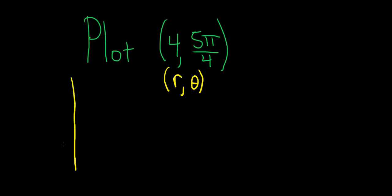So to plot the polar coordinate, we'll first travel a distance of theta. So theta is 5π over 4. So here's π. And if you think of π as 4π over 4, 5π over 4 is a little bit more. So it's going to be like down over here.